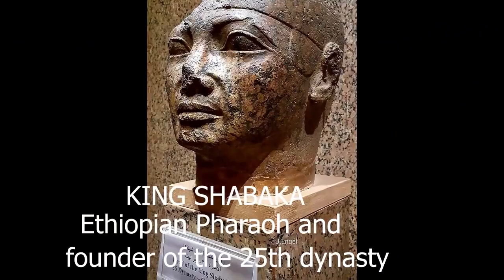Kush then conquered all of Egypt around 715 BC, ending the 22nd, 23rd, and 24th dynasties by founding the 25th dynasty. The 25th dynasty is called Kushite in the king's list and is sometimes referred to as the Ethiopian dynasty by some historians. The kingdom was so powerful that in 701 BC, the Hebrew king Hezekiah sought and received the help of a Kushite king named Shabaka to help him revolt against Assyria.